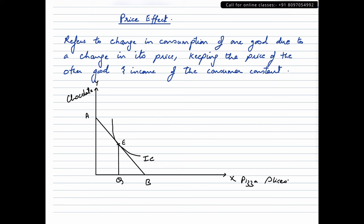So we have this diagram where we have chocolates on y-axis, pizza slices on the x-axis. A, B is the budget line and we have IC which is the indifference curve tangent at point E where we have quantity Q for pizza slices.